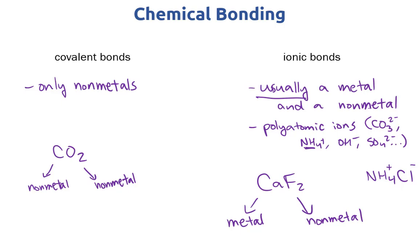So there you have it. As long as you can recognize these polyatomic ions, you should be able to distinguish between ionic and covalent bonding for any molecule that you see in your first year chemistry course.